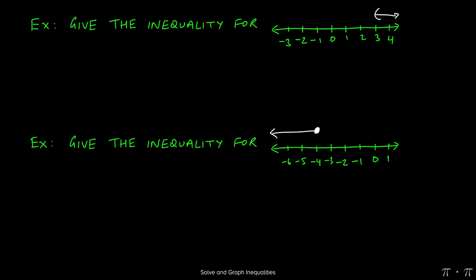Let's say we're asked to give the inequality for the following two graphs. For the first problem, we see that we're looking at numbers that are greater than 3, because they're to the right of 3, but they're not including 3, indicated by the parentheses. So we would say that the inequality would be x is greater than 3.